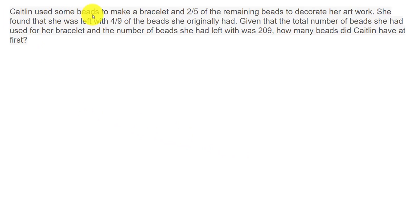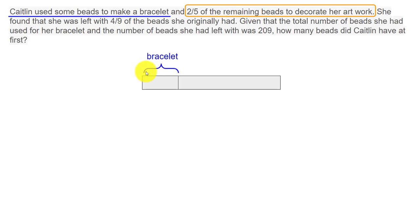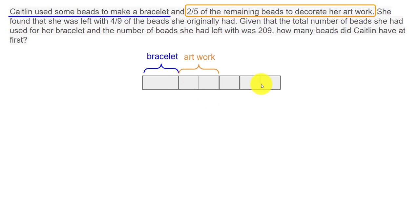Let's read this question: Caitlin used some beads to make a bracelet — so we do not know how many beads she used. Then she used two-fifths of the remaining beads to decorate her artwork. In our model, the portion used for the bracelet is unknown, and the remaining beads are divided into five parts with two parts used for artwork.